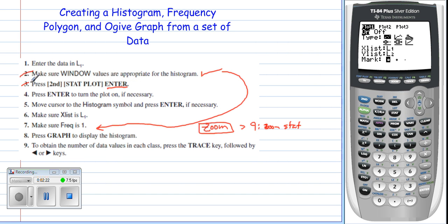Number four, press enter to turn the plot on. You'll notice my plot is already turned on. Just to show you what it looks like when it's turned off, I'm going to use my side arrow to go to off, press enter. Now you'll notice off is highlighted dark black, whereas on is not. So I'm going to turn it back on, press arrow over, enter.